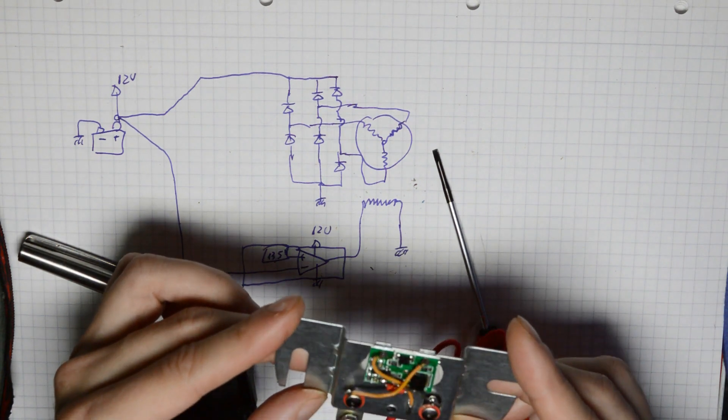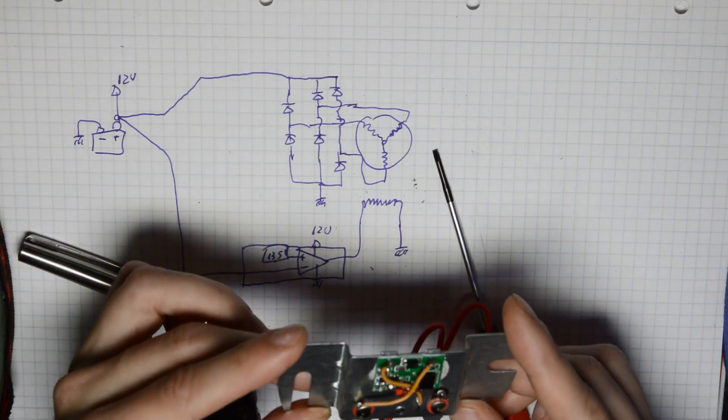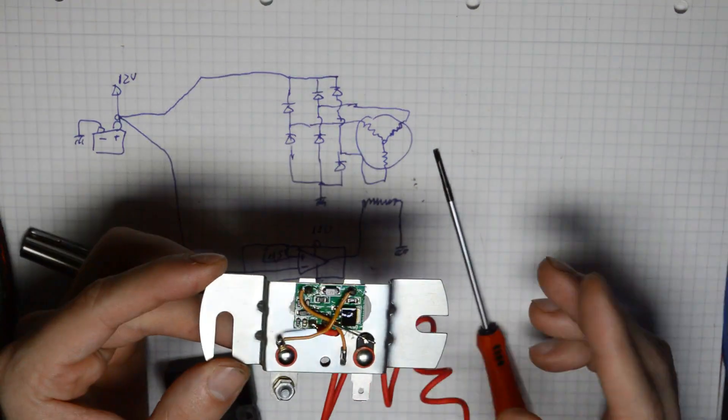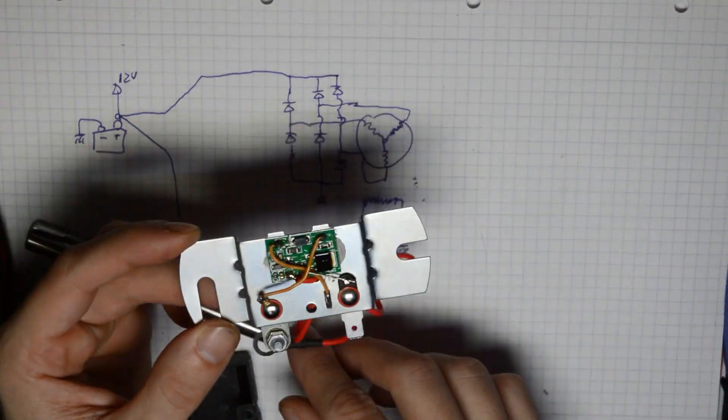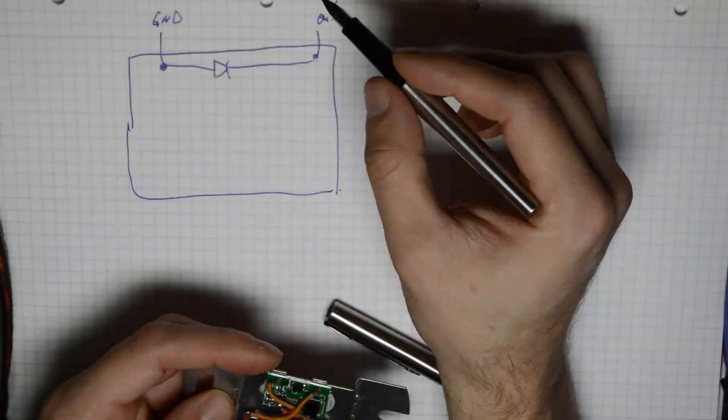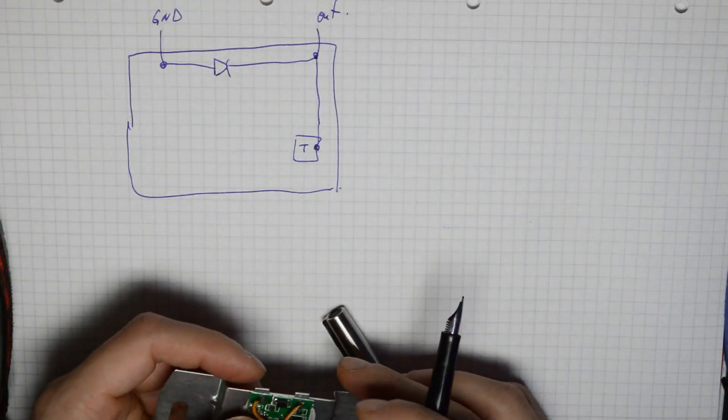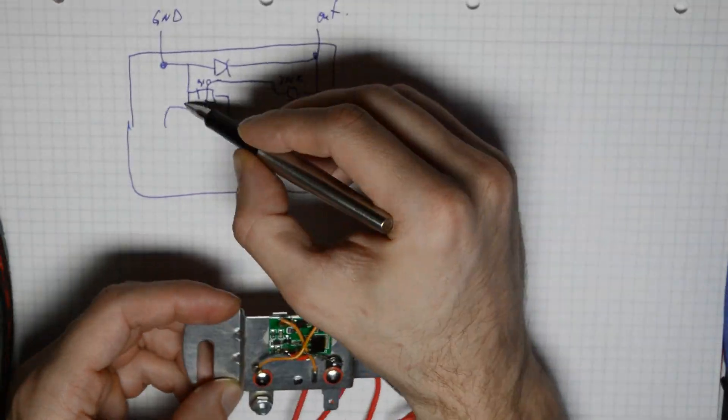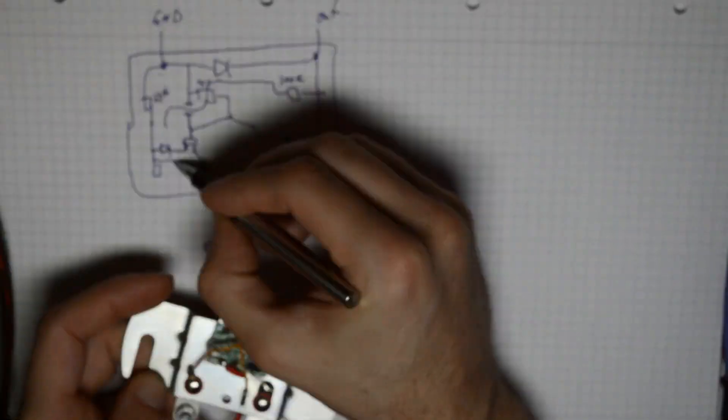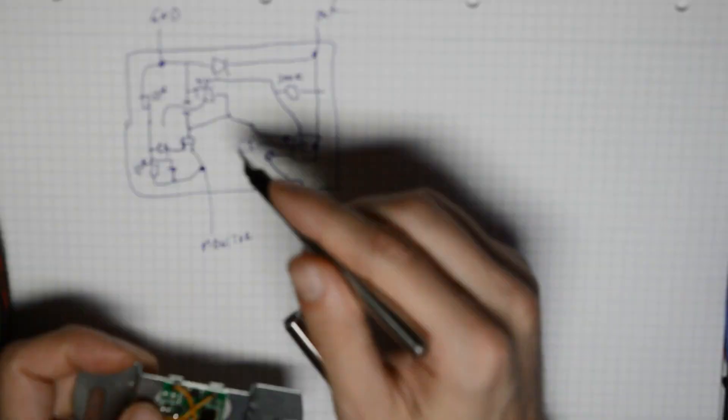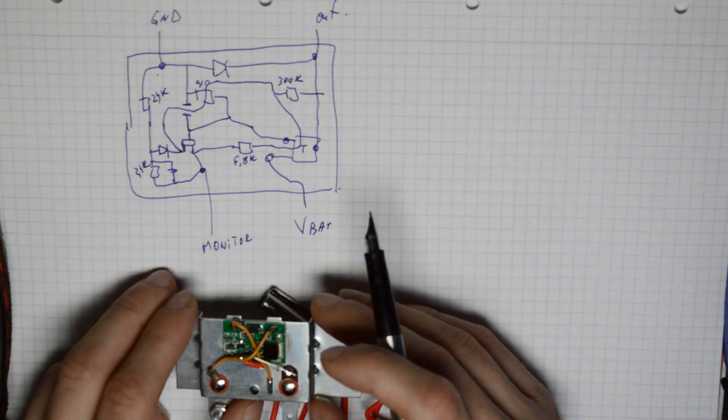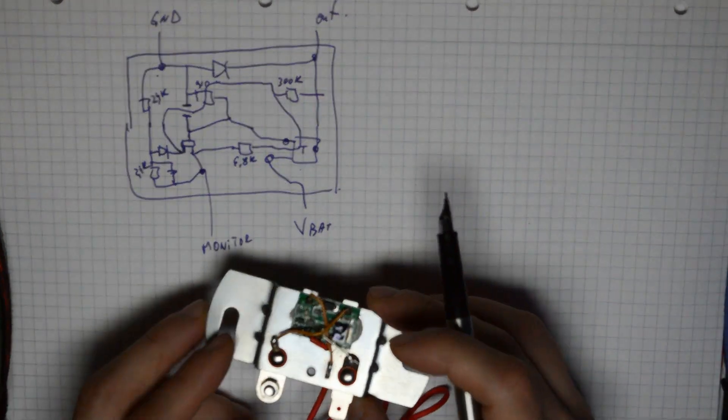Now what we can do is reverse engineer this thing. Since there's only like ten components here, we can try to make a schematic from it. Let's try and do that. So if I did everything right, this is basically what we got on the board.